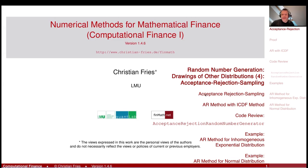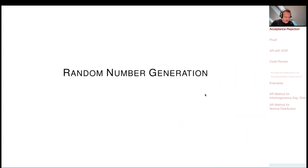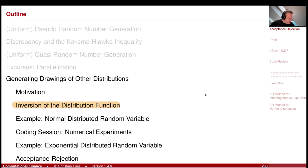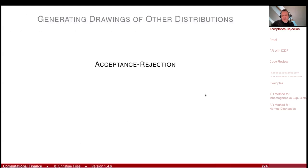Welcome to Numerical Methods. We are still in our section on random number generation, and we started talking about generating drawings of other distributions. A very popular method is the inversion of the distribution function. Today I would like to discuss the acceptance-rejection method — acceptance-rejection sampling — an interesting method that also gives a link to weighted Monte Carlo.